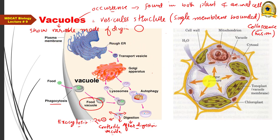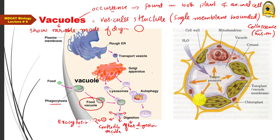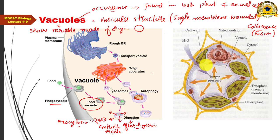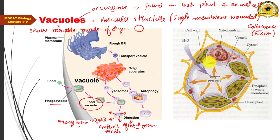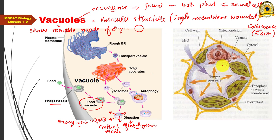This is the basis of an MCQ: 'Which organelle occupies most of the proportion of cytoplasm in a plant cell?' — the answer is vacuole. In contrast, in an animal cell, the nucleus is the largest organelle and occupies most of the cytoplasm. Also note that not all plant cells have such a large vacuole.